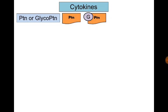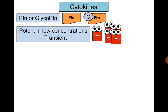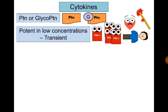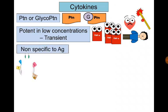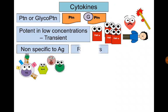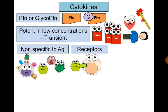Cytokines are proteins or glycoprotein molecules produced by T helper cells. They are potent in very low concentrations and over-secretion of cytokines can result in systemic toxicity. Their effects are transient, they are not specific, and they attach to their target immune cells through receptors.